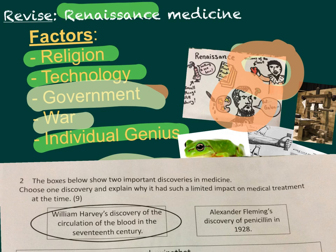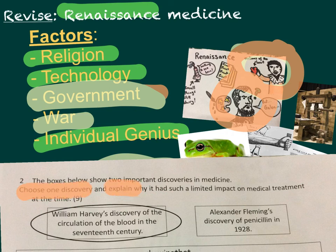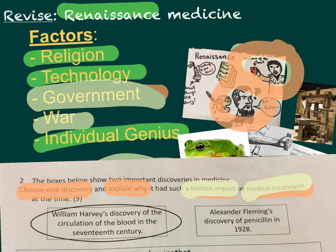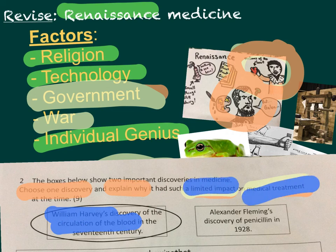So what might you be asked to do with this information in your exam? Here's an example of a nine mark question for an AQA medicine through time legacy spec, for the 2017 exam. The question says: 'The boxes below show two important discoveries in medicine. Choose one discovery and explain why it had such limited impact on medical treatment at the time.' We've selected William Harvey's discovery of the circulation of blood in the 17th century.